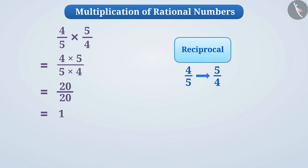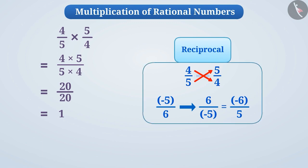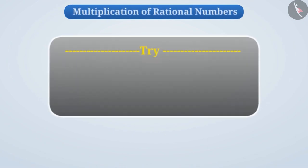By looking at these two rational numbers, you can also understand that the reciprocal of a number is obtained by changing the numerator and denominator of that number. For example, the reciprocal of minus five by six is six by minus five, which can also be expressed as minus six by five. Reciprocals have great significance when dividing rational numbers. We will understand this by learning the division of rational numbers.